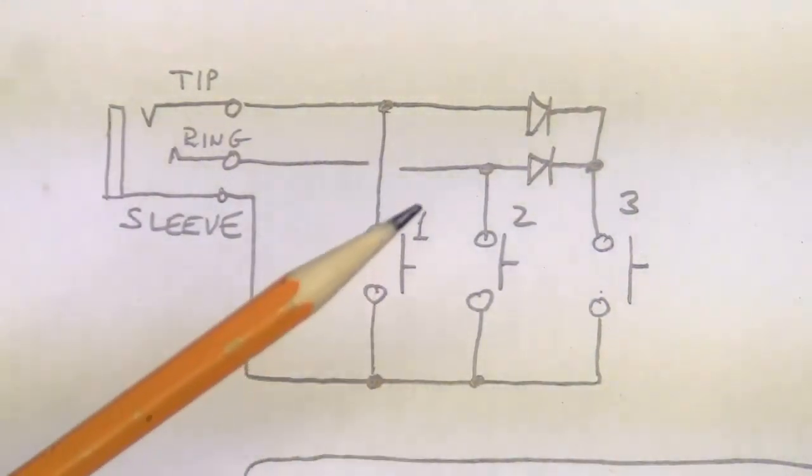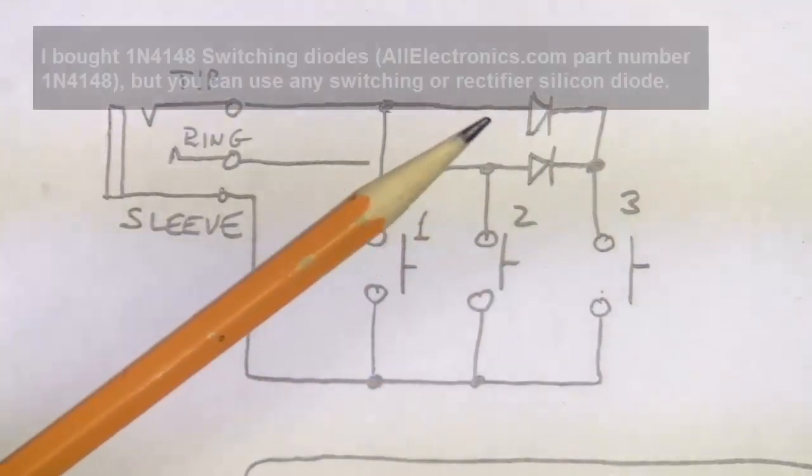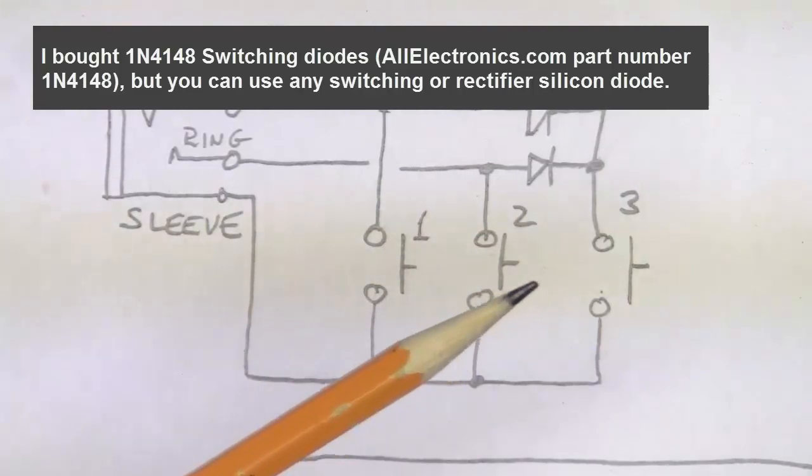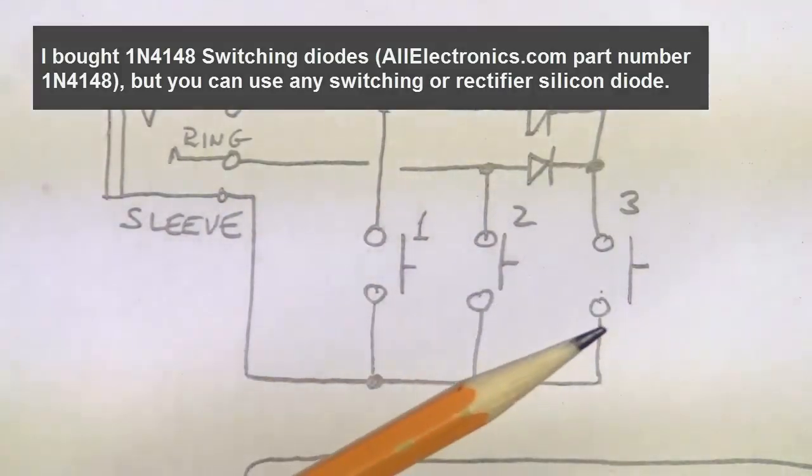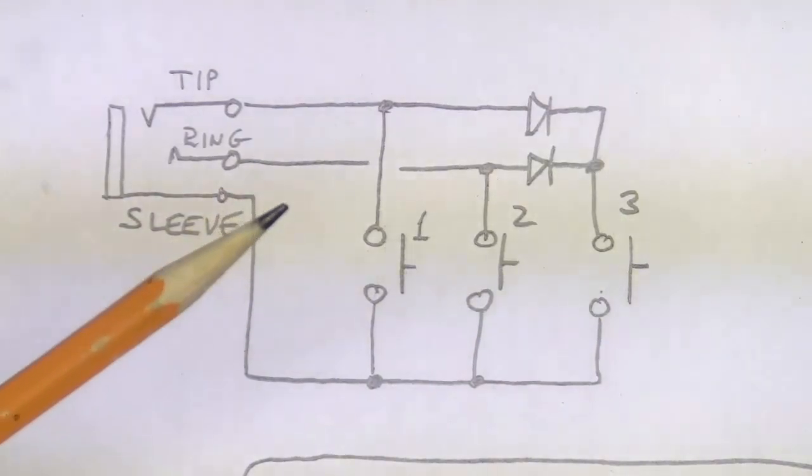Switch three is connected to both the tip and the ring through a diode, which only allows the current to flow in one direction. So, when I push switch three, both the tip, the ring, and the sleeve are all connected together.